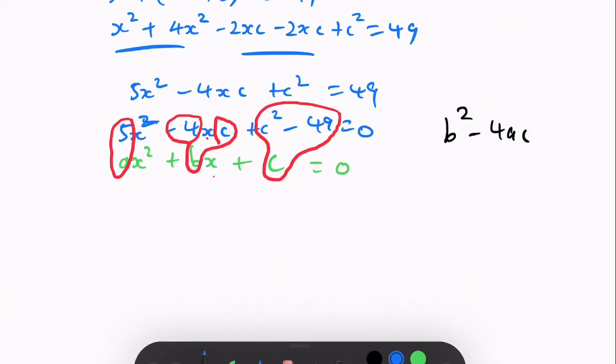So we get, for b squared minus 4ac, b is minus 4c, so minus 4c squared minus 4, as written here,